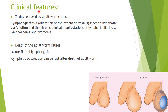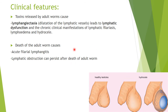The clinical features arise from two phenomena: toxins released by the adult worms and the death of the adult worm itself. Toxins cause dilatation of lymphatic vessels, known as lymphangiectasia, leading to lymphatic dysfunction, lymphatic filariasis, lymphedema, and even hydrocele. When the adult worm dies, it causes acute filarial lymphangitis, and lymphatic obstruction can persist even after the worm is dead.